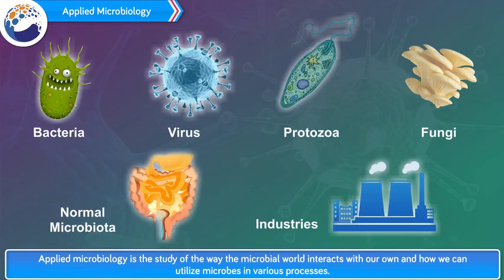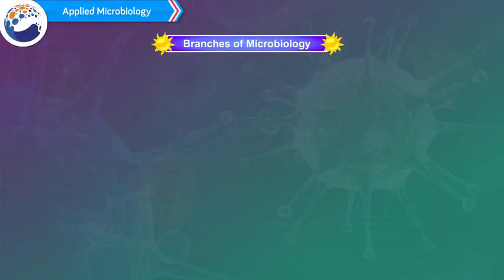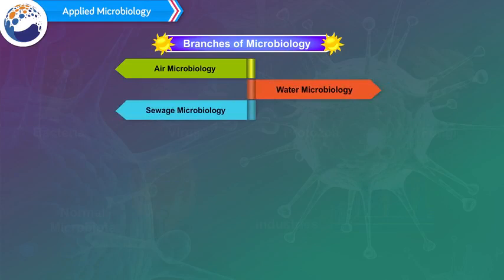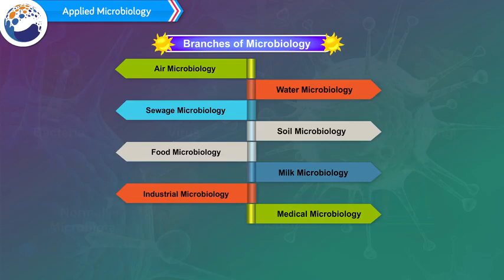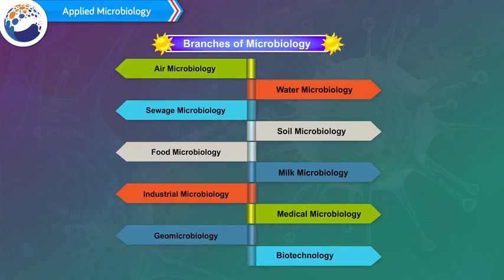The different branches of applied microbiology are as follows: 1. Air Microbiology, 2. Water Microbiology, 3. Sewage Microbiology, 4. Soil Microbiology, 5. Food Microbiology, 6. Milk Microbiology, 7. Industry Microbiology, 8. Medical Microbiology, 9. Geomicrobiology, 10. Biotechnology. Out of which, we are going to study Industrial Microbiology in detail in this chapter.